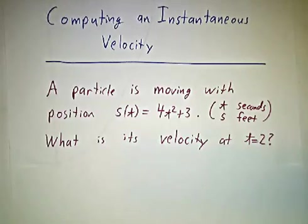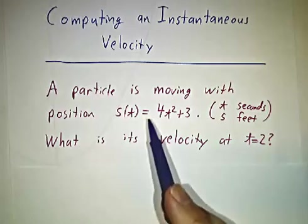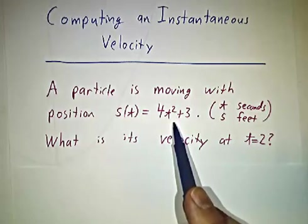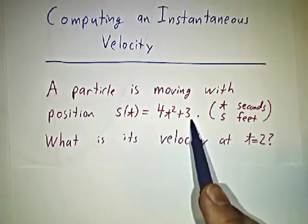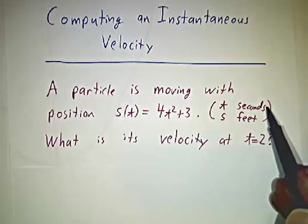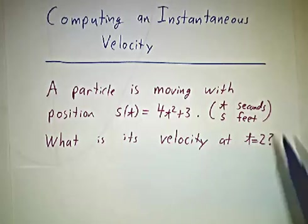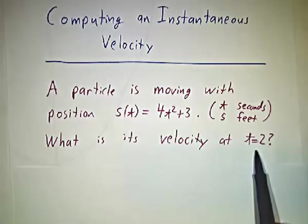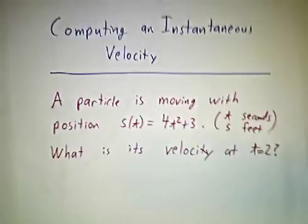So here's the problem. We've got a particle that's moving and we have a formula for where it is at any given time. Its position is 4t squared plus 3, where we're measuring t in seconds and s in feet. So what's the velocity at t equals 2? Straightforward question. Let's figure it out.